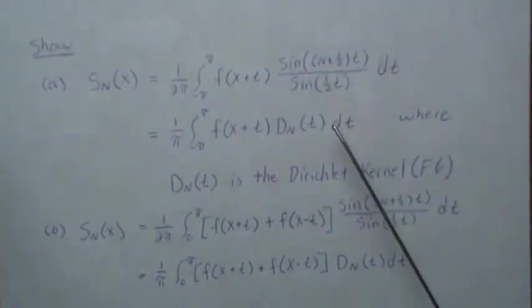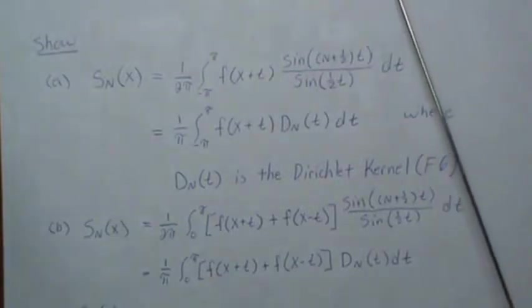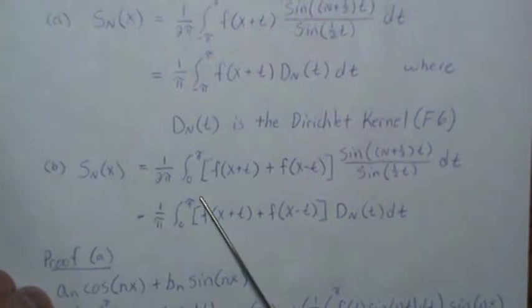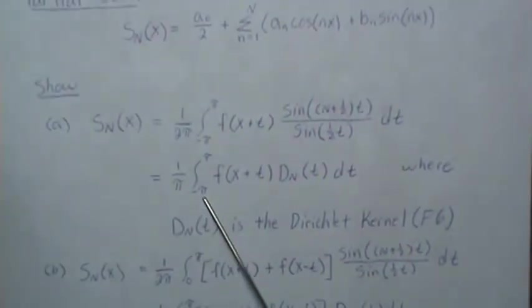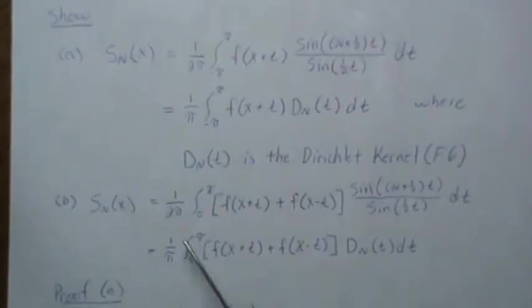Those two are equivalent, and we derive the Dirichlet kernel in F6, which is the video before this one. Notice that the integral is over minus π to π.